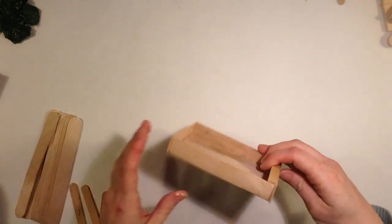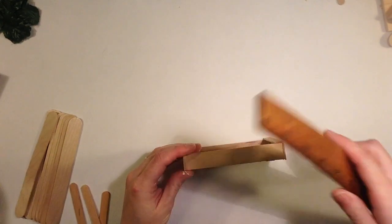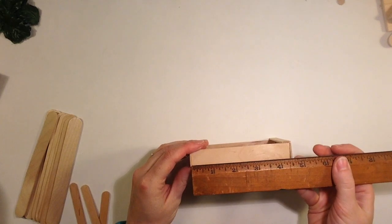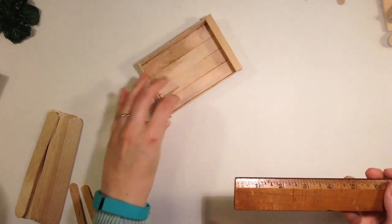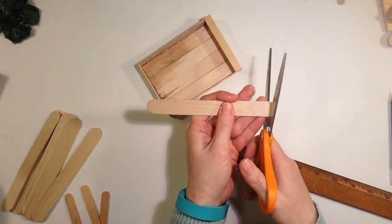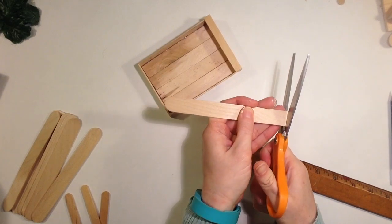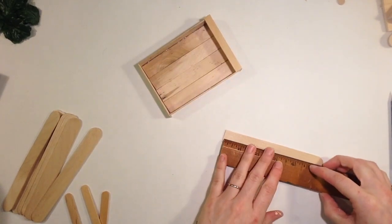For each crate, you're going to need eight jumbo popsicle sticks and three regular popsicle sticks. You're going to cut one of the jumbo sticks four and a half inches long.